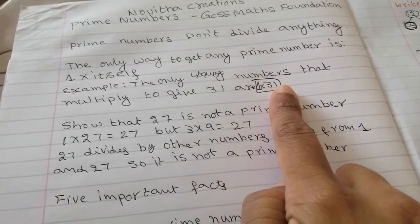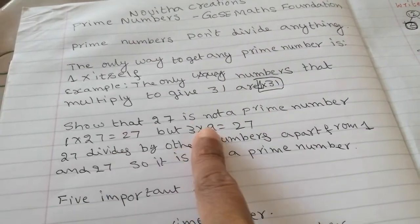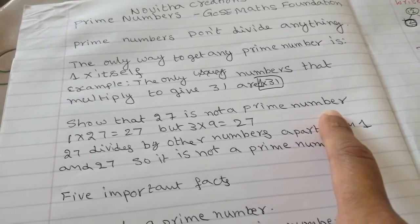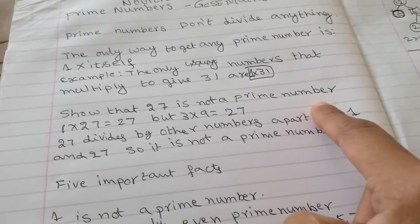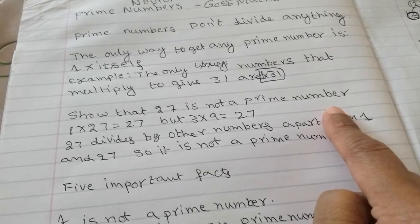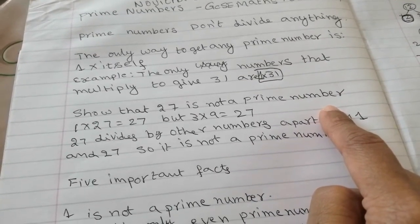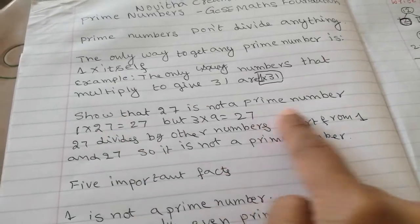This is example for prime numbers. Show that 27 is not a prime number. Sometimes in GCSE mass, whether calculator paper or non-calculator paper, they will ask for 1 mark or 3 marks like this question.